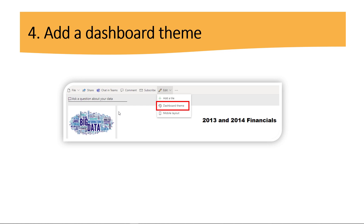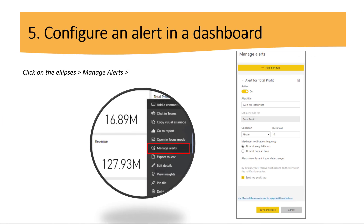Let's learn how to configure an alert in a dashboard. This is a wonderful feature within Power BI service. We can configure alerts on dashboard tiles, and it's specifically for tiles that display a single numeric value like cards. For example, you can see here on screen — this is a card for revenue, this one is profits — and then you have the option to manage alerts and create the alert there.